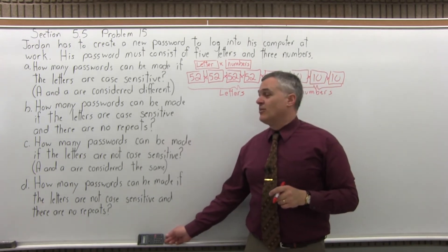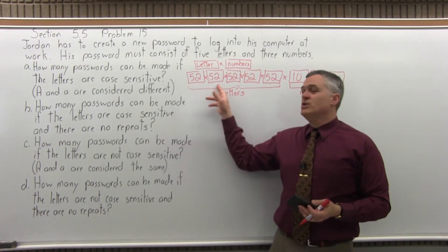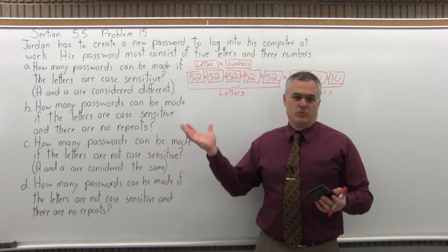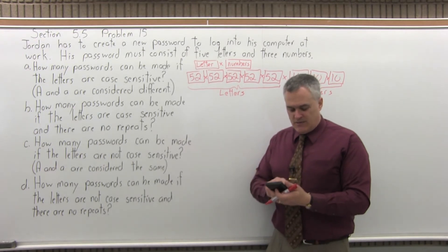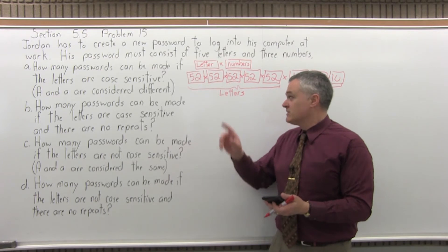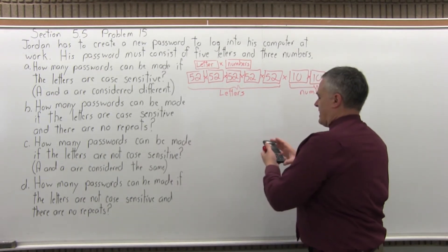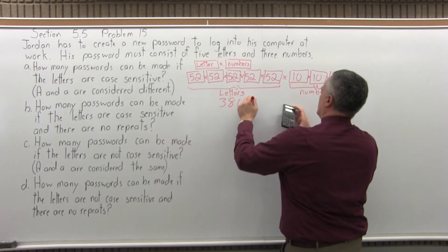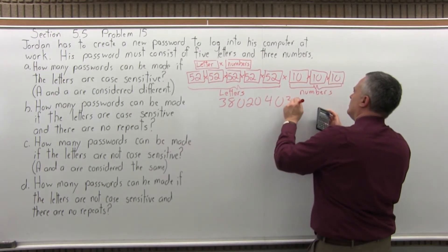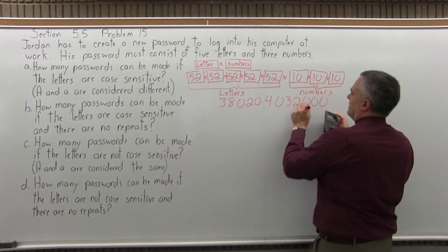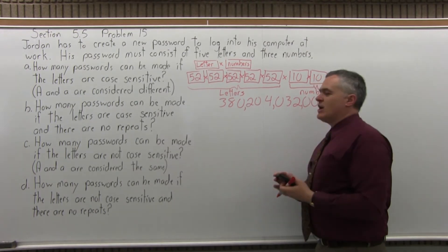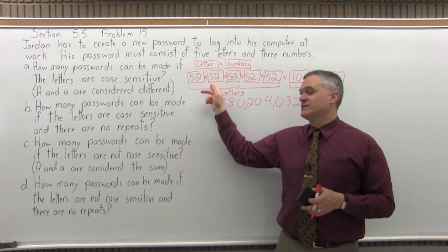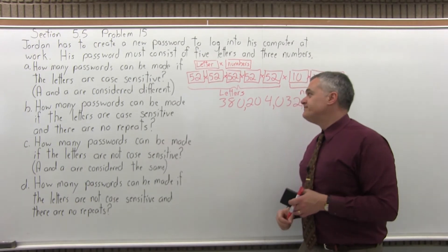That's too big to multiply out without the aid of a calculator. So if I put this on a test or quiz and you fill out this much and stop, that would be fine for full credit. Just out of curiosity, what is it? I would guess it goes into the billions. If I do 52 raised to the fifth power — the same as 52 times 52 times 52 times 52 times 52 — and then times 10 times 10 times 10, that comes out to three hundred and eighty billion different passwords that you can make using this system. Pretty tough to hack just by guessing at it. So that's part A.